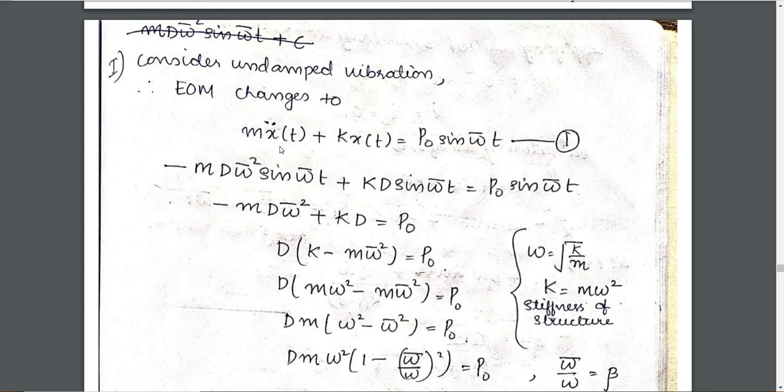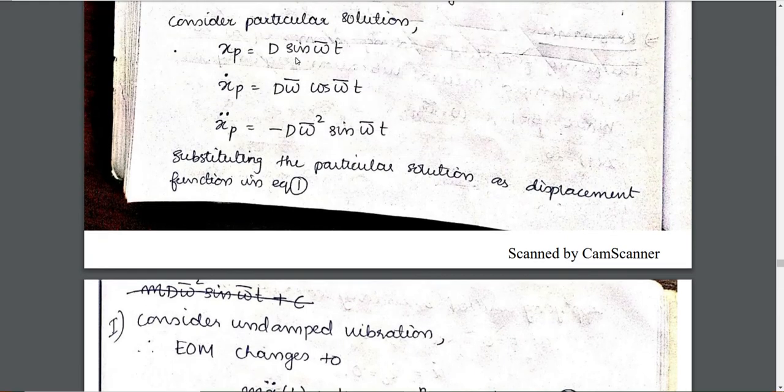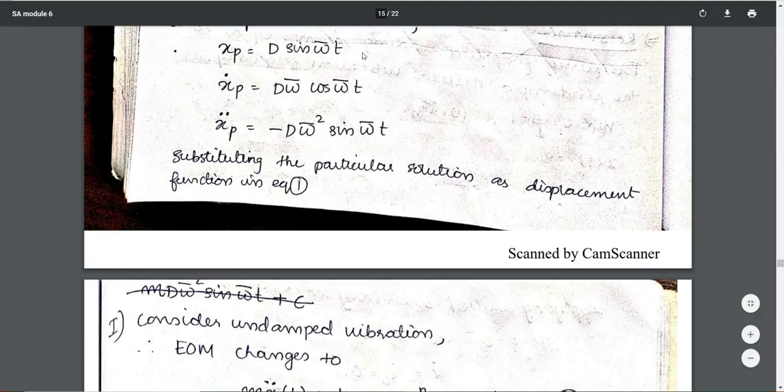For undamped vibration, we consider the terms p, x_double_dot, and xp. We differentiate xp and substitute the result back.